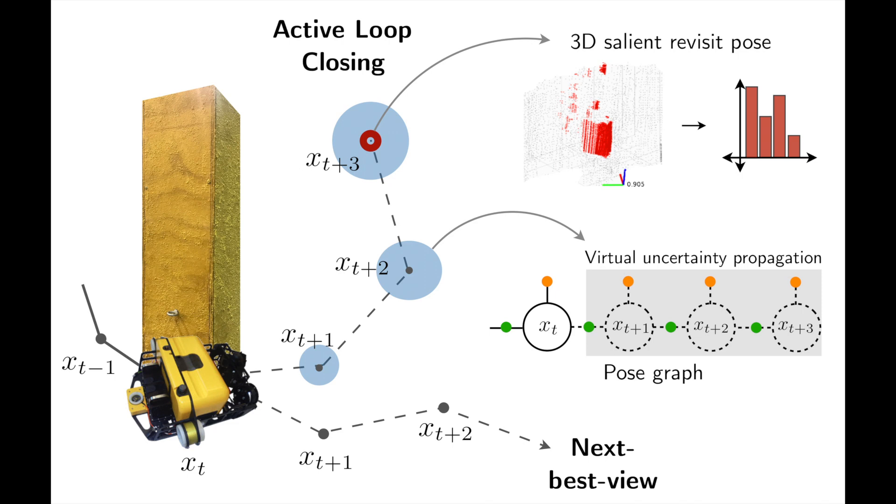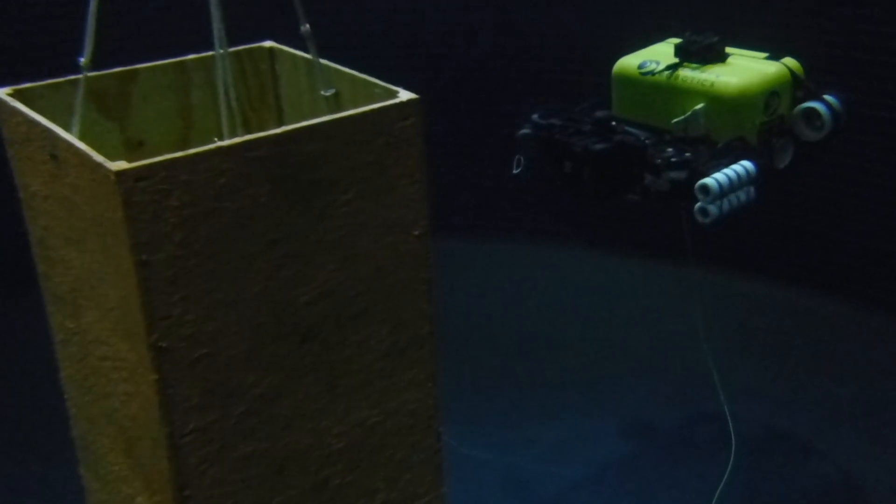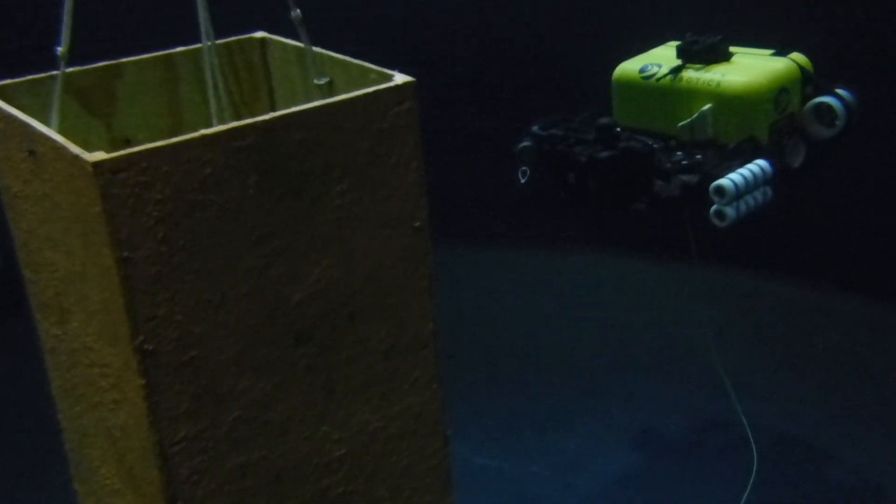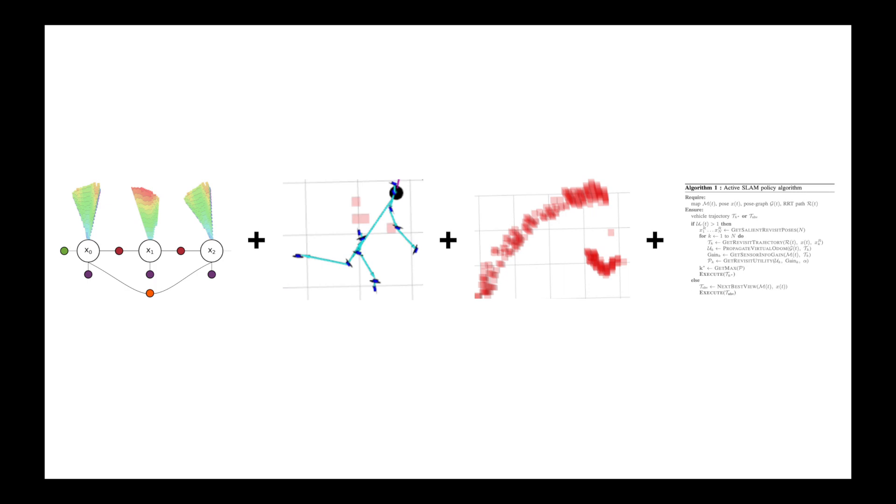We propose a navigation policy that reduces vehicle pose uncertainty by balancing between volumetric exploration and revisits. We introduce a metric of submap saliency to identify good revisit locations in the world. Our work combines a pose graph representation with a sampling-based planner, octomap world representation, and active navigation policy.